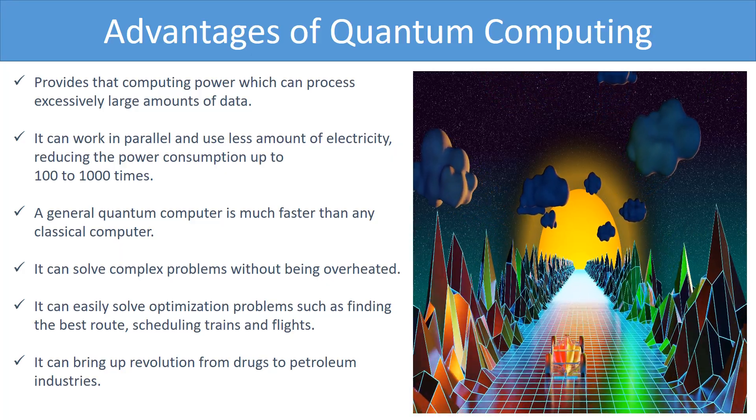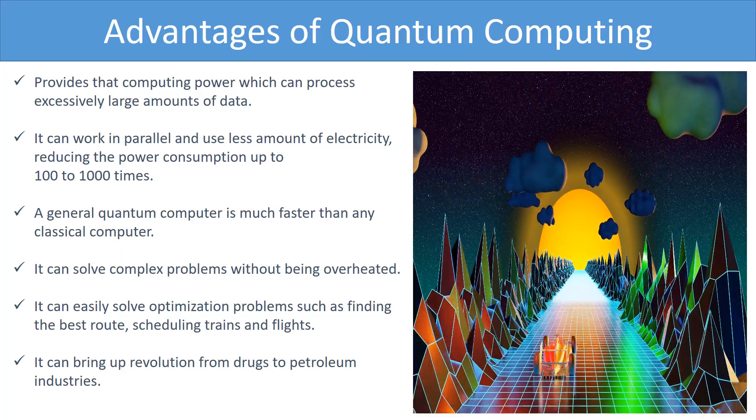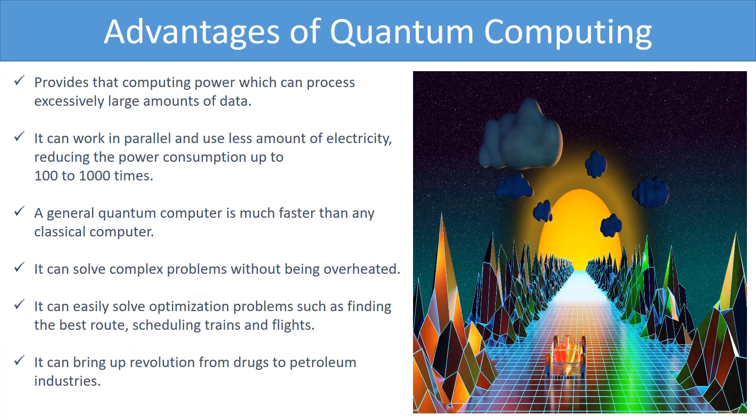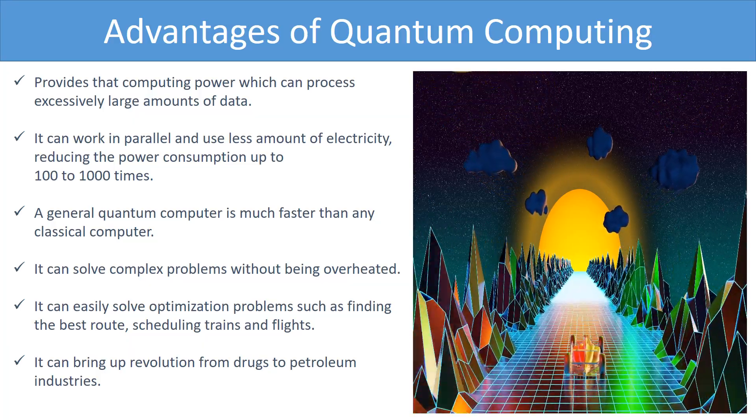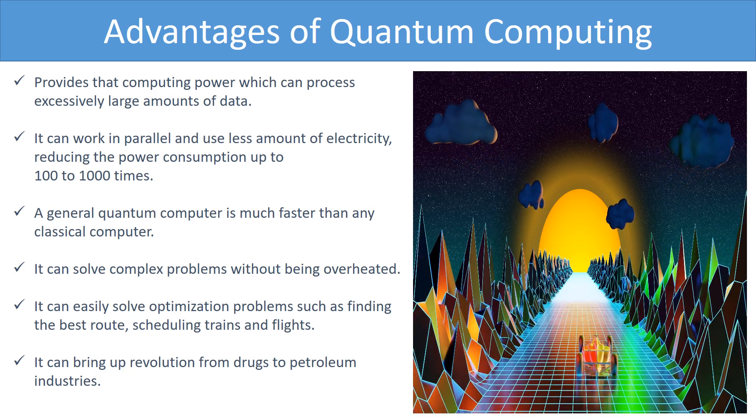It can easily solve optimization problems such as finding the best route and scheduling trains and flights. It would also be able to compute 1 trillion moves in chess per second. It can bring up revolution from drugs to petroleum industries. The invention of new drugs will become possible. The marketable algorithms of financial organizations can be improved. The field of artificial intelligence can be improved soon.